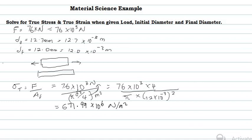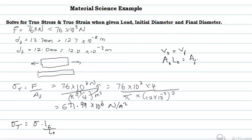If you like, you can cross-check by using the formula that says true stress equals engineering stress multiplied by LF/LO. You might think we are not given the original and final lengths — only diameters — but that is not a problem. Recall that volume is constant, so the original volume equals the final volume, meaning A₀L₀ = A_F L_F.